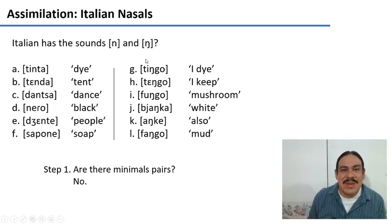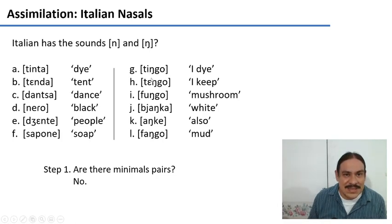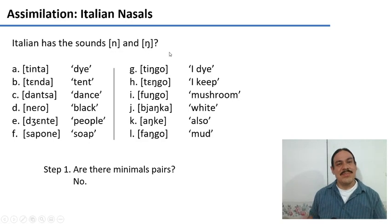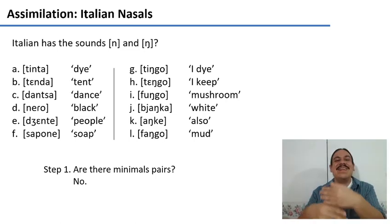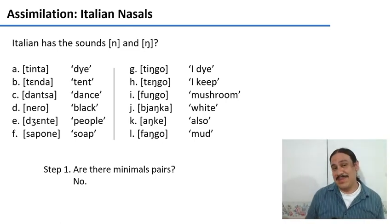Interestingly, the set does have a minimal pair, but for vowels, the words tingo and tengo are a minimal pair, but they're a minimal pair for i and e, not for the nasals. We were looking for a minimal pair where the only difference is that one has the n and the other one has the velar engma. And we don't have that. So we don't have minimal pairs.